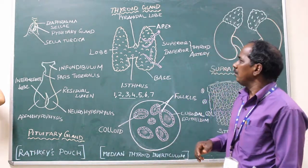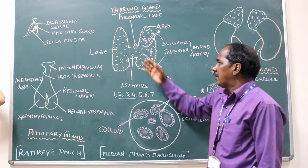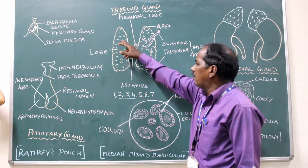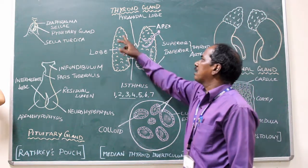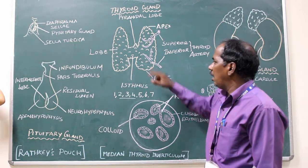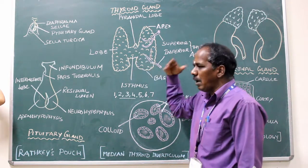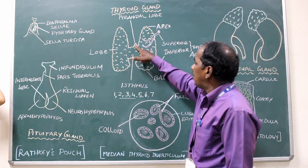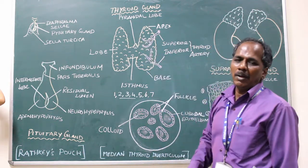Thyroid gland — it is an H-shaped gland and it is the largest endocrine gland, present on the anterior and lateral aspect of the neck. It consists of two lobes connected by an isthmus. Each lobe has an apex, a base, a medial border and three surfaces. The isthmus has a superior and inferior border and two surfaces — anterior and posterior. On the superior border of the isthmus, there is a slight projection on the left side known as the pyramidal lobe.